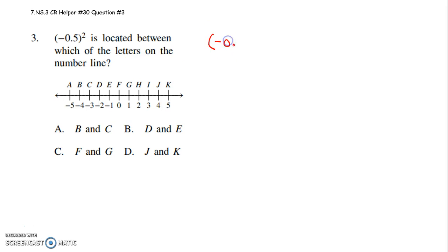So I have negative 0.5, and I'm going to square that. To square a number means to multiply it by itself. So I have to do negative 0.5 times negative 0.5. Negative times a negative is a positive. 0.5 times 0.5 is 0.25.